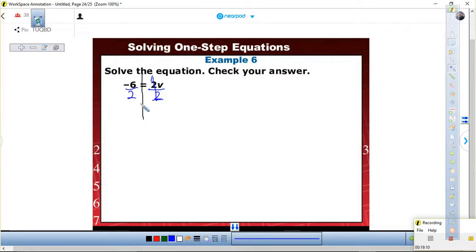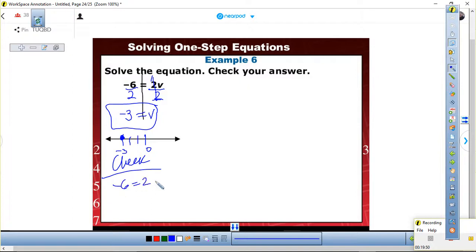So what happens to the 2s? They don't cancel. They become a 1. Because if they were to cancel, what does that become? 0. What is 0 times V? 0. So therefore, it's 1 times V is V. We're left with negative 3. Let's graph or plot our point. We got 0, 1, 2, 3. Plot my point. There it is. Does everybody see my point? And then we're going to check. We got negative 6 equals 2V. Negative 6 equals 2 times negative 3. Negative 6 equals negative 6. Yes.